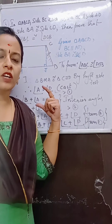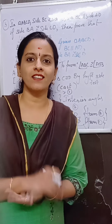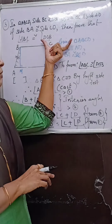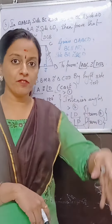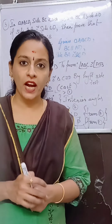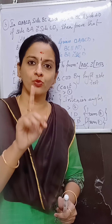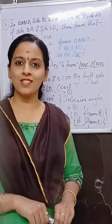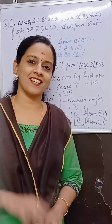So we solved this by constructing perpendiculars, forming congruent triangles, and keeping what was to be proved in front of our eyes. Practice these three sums well — one sum from this will surely come in your exam. Meet you with the next part of the chapter in the next class. Bye.